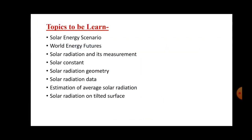Let's see which topics we have to learn from unit number one. In unit number one we have to discuss topics like the solar energy scenario — that means the present scenario of solar energy. Then world energy features. Then solar radiation and its measurements — how much radiation is emitted from the sun and how to measure it. Then we have to study the solar constant — what it is and how to calculate it.